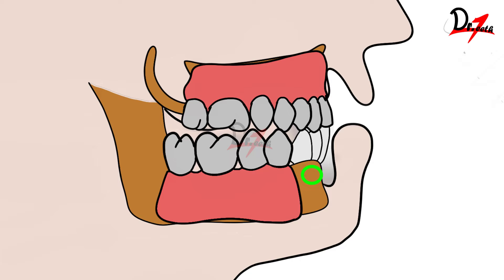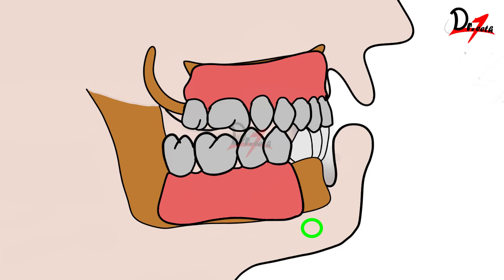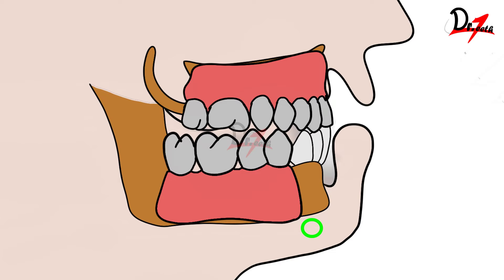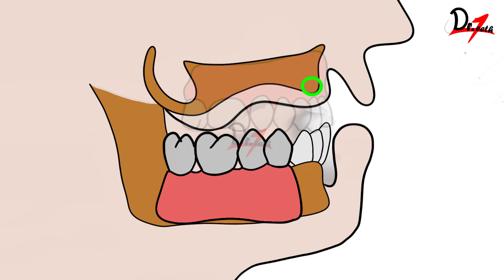Since the patient has his anterior teeth present, to get the proprioception — natural teeth give you a feeling whenever you are eating or drinking — the patient will concentrate the occlusal load on the mandibular anterior teeth, because that is the only teeth he has. When there is a lot of occlusal load anteriorly, there will be increased resorption in the anterior maxilla, and because of the continuous loading and unloading, we get flabby tissue in the anterior region.